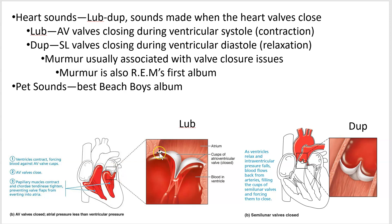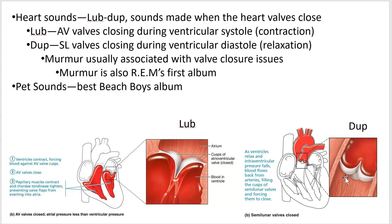The first sound, lub, is the atrioventricular valves. As soon as those ventricles contract, it slams those doors closed and you get that first heart sound. When the ventricles relax, all the blood is out in the arteries. The arteries are under pressure and want to flow back into the heart, but the valves there prevent it from going back. So the first noise is lub — the AV valves — and the second noise is dub — the semilunar valves. This is a very short video.